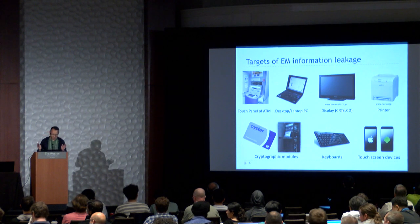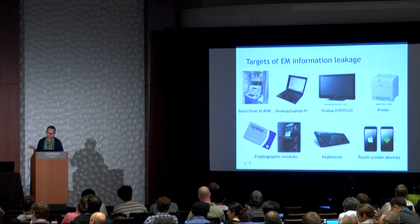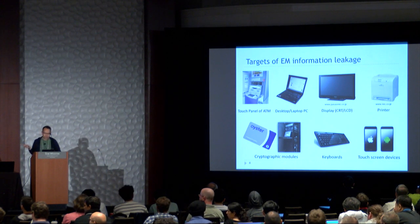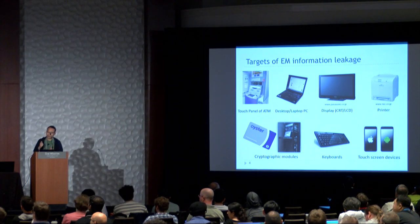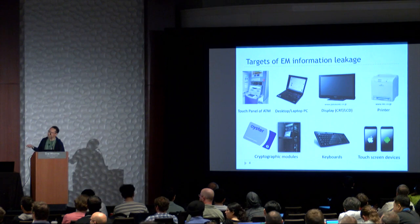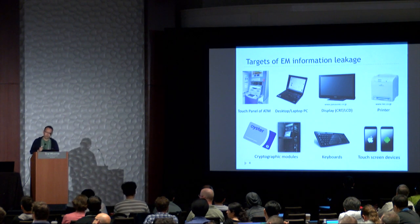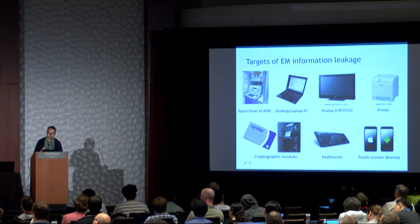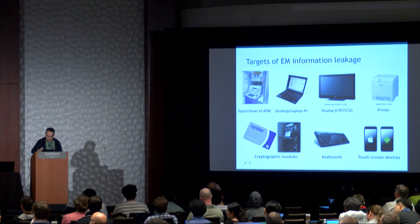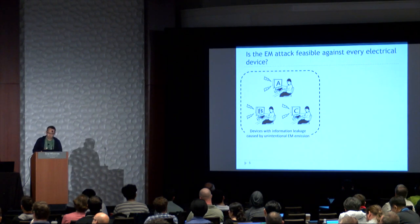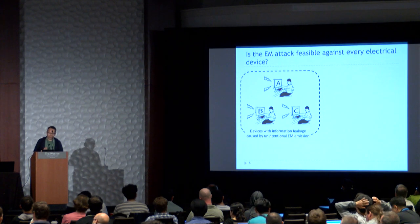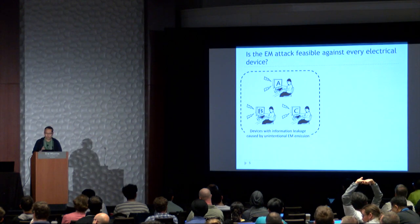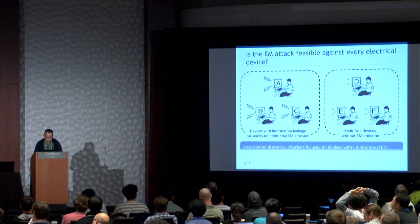That was a conventional study. Here, as an example of EM attacks, information leakage occurs due to unintentional EM emission from electrical devices. Even devices not listed can be targets if they handle information as electrical signals. On the other hand, not all electrical devices are targets — some have weak EM emissions and are potentially leak-free.